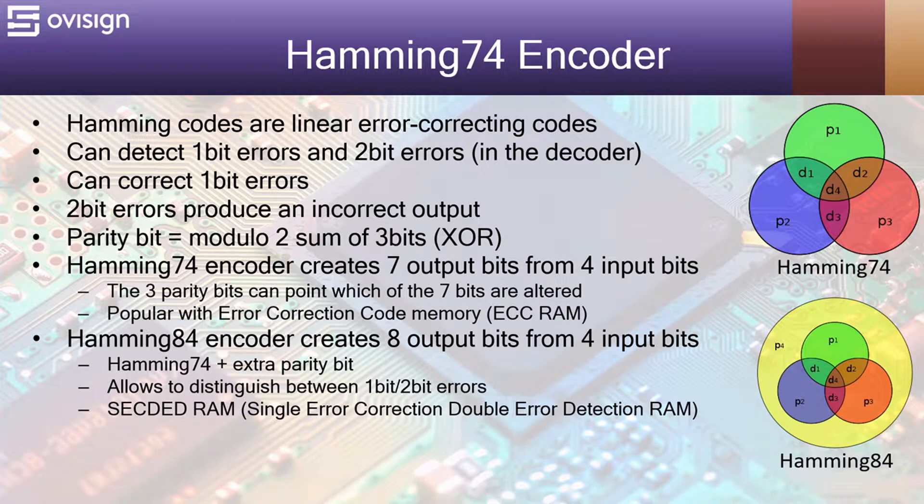A Hamming 7.4 encoder creates seven output bits from four input bits. The three parity bits can point which of the seven bits are altered. This circuit is popular with error correction code memory which is also known as ECC RAM.